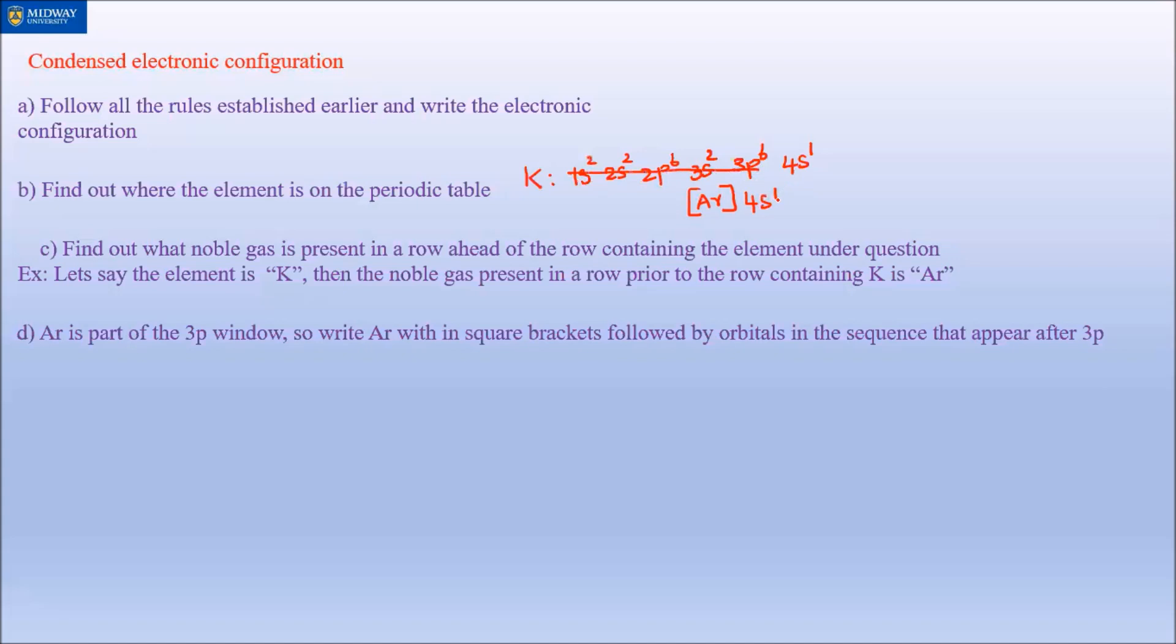Now you see why I was emphasizing the idea of windows in the previous videos. Because instead of saying this is 3p, 3p, 3p, if you just say all of these elements are in the 3p window, argon is the last element in the 3p window. So basically you have to strike everything until where the window the current element is located and replace that with the noble gas that's in the row ahead of the element under question. So I wrote [Ar] 4s1, and you can see that's how it works.